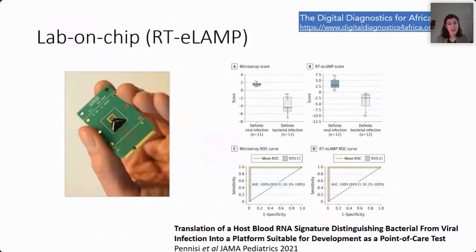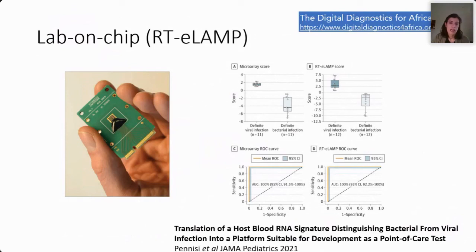As part of the Digital Diagnostics for Africa Consortium, we're also thinking about the next step — how we can bring these findings to the patient, to the clinic, and to clinical teams. We recently published in JAMA Pediatrics the first proof-of-concept results, showing that the two-gene signature for bacterial and viral infection can be measured on a chip and gives exactly the same sensitivity and specificity as the more complex microarray or RNA-seq processes.